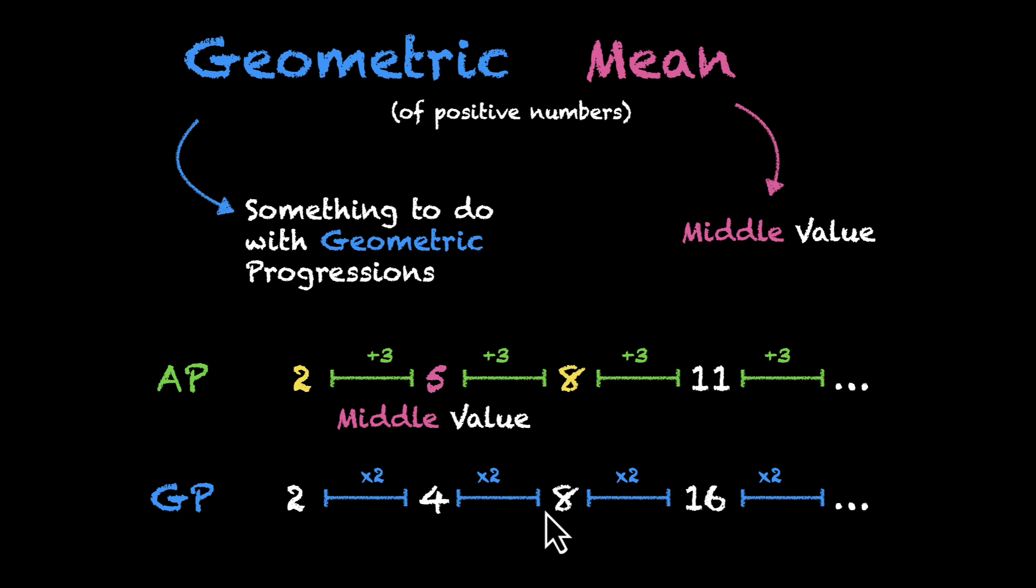So taking the same example, let's pick 2 and 8. What's their middle value? In this GP world, their middle value becomes 4. This comes in between 2 and 8. So this is our middle value. This is our geometric mean.